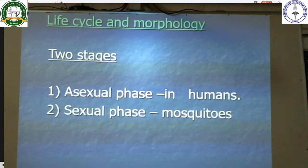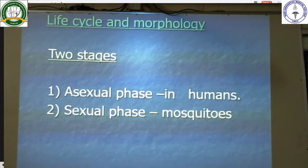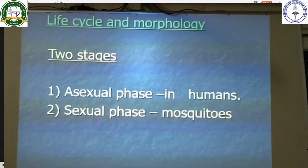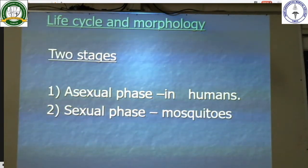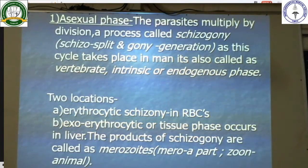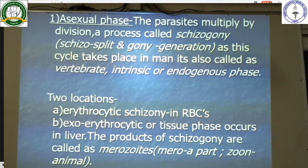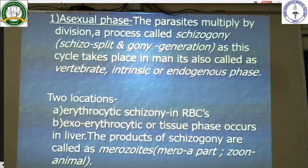The life cycle and morphology of malaria: there are two stages in the life cycle of the malarial parasite — the asexual phase, which occurs in humans, and the sexual phase, which occurs in mosquitoes. In the asexual phase, the parasites multiply by division, a process called schizogony. As this cycle takes place in humans, it is also called the vertebrate intrinsic or endogenous phase.